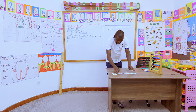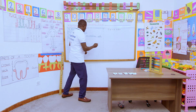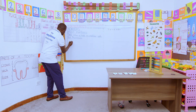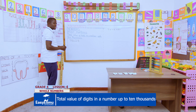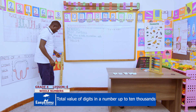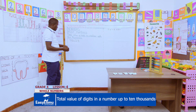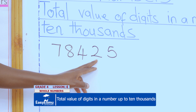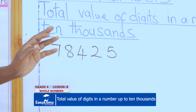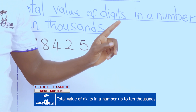We have formed a number from our cards that we jumbled. We have digits: 7, 8, 4, 2, and 5. This is the number that you have come up with — 78425.